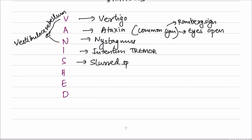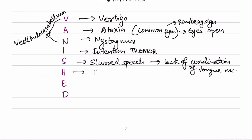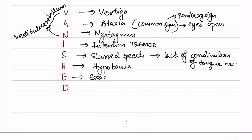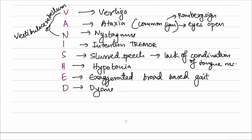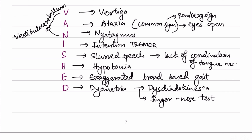S stands for slurred speech or dysarthria, due to lack of coordination of tongue muscles. H stands for hypotonia - since the spinocerebellum controls muscle tone, cerebellar disorders cause hypotonia. E stands for exaggerated broad-based gait - the patient adopts a very wide gait because when trying to put feet close together they fall due to ataxia. D stands for dysmetria, which includes dysdiadochokinesia - difficulty performing alternating supination and pronation movements. This is also the basis for the finger-nose test. That concludes the neuroanatomy, physiology, and clinical symptoms of cerebellar disorders.